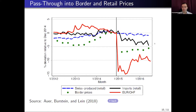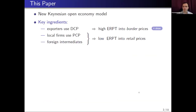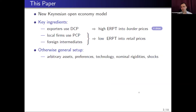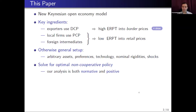A recent study by Burstein and Jaimovich looked at the episode of sharp appreciation in Switzerland. The solid red line shows the sharp change in nominal exchange rate at the beginning of 2015. Green circles show the response of border prices and the solid black line shows the response of retail prices of imported goods. As you can see, border prices follow the nominal exchange rate to a much larger extent than retail prices of imported goods. Both these key features will have striking implications for the optimal policy.